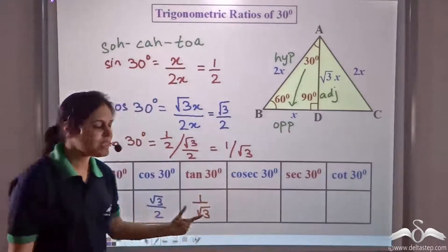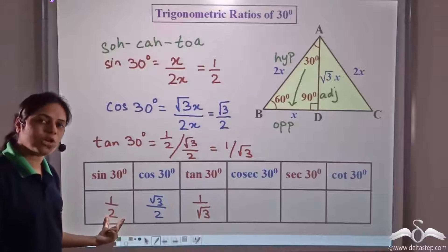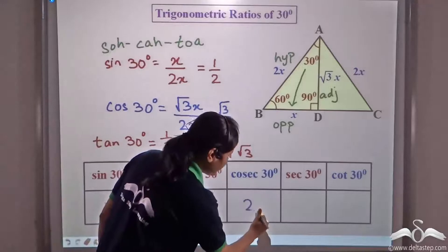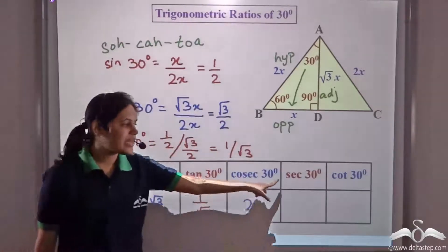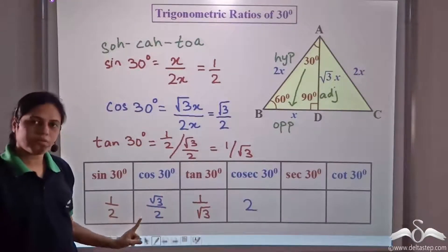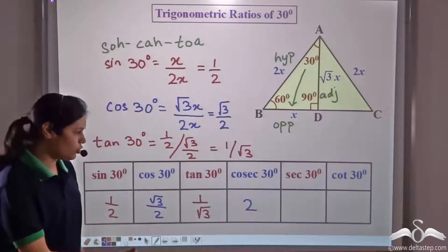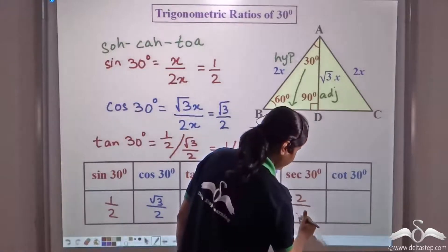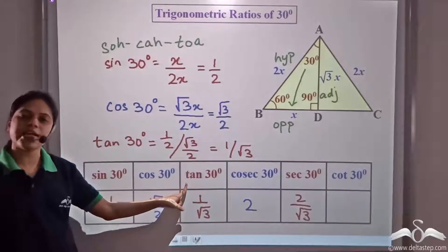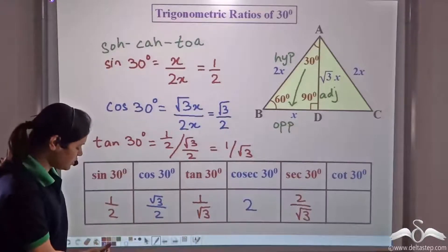Cosec 30 degree is the reciprocal of sin 30, which is the reciprocal of 1/2, equal to 2. Sec 30 degree is the reciprocal of cos 30, which is the reciprocal of √3/2, equal to 2/√3. Cot 30 degree is the reciprocal of tan 30, which is the reciprocal of 1/√3, equal to √3.